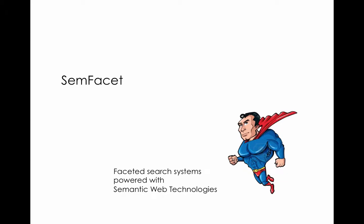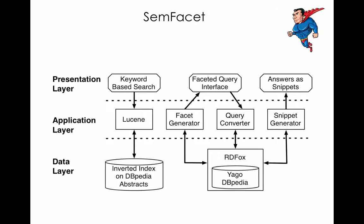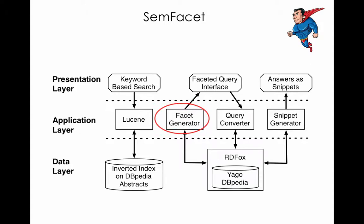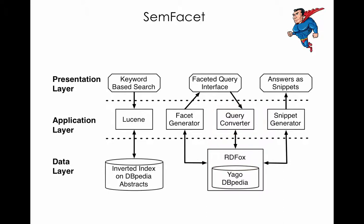SamFacet is a faceted search system powered with Semantic Web technologies. SamFacet provides faceted search over RDF and OWL2 data. In our demo, we set SamFacet over a fragment of Yago and DBpedia. SamFacet relies on Lucene for keyword-based search over DBpedia abstracts. It automatically generates faceted query interfaces, converts faceted queries into SPARQL, executes SPARQL queries using RDFox, and returns to the user answers in the form of snippets.